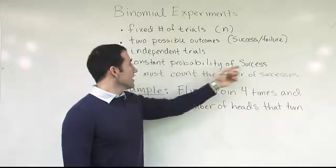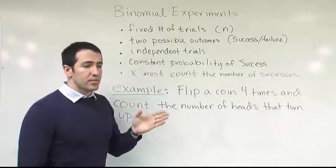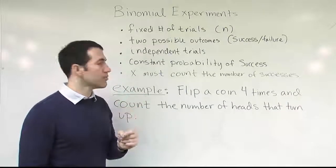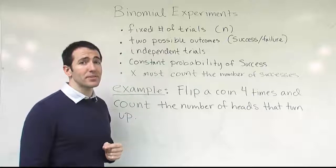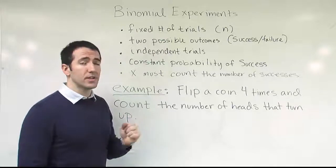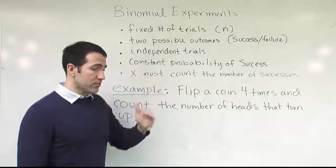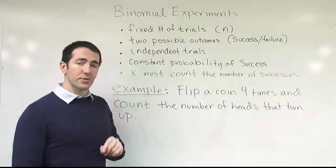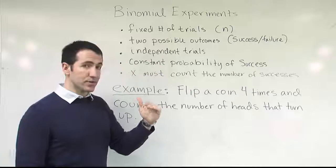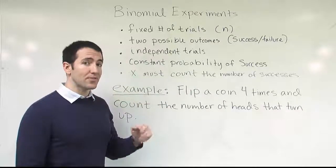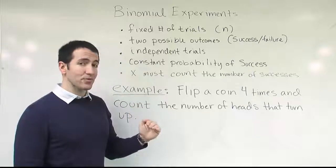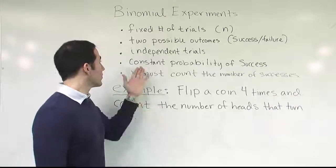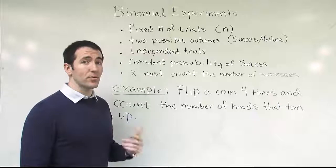The fourth principle is a constant probability of success. On our 10-question multiple choice quiz, as long as every problem has exactly four answer choices, the probability of success on any individual guess is always 25%, or one quarter. That would change if, say, there were nine multiple choice questions with four answer choices each and one true-false question. The true-false question would give a 50% chance of getting it right — different from the 25% chance on the other problems. In that case, we would not have a constant probability of success, and the experiment would not be binomial.